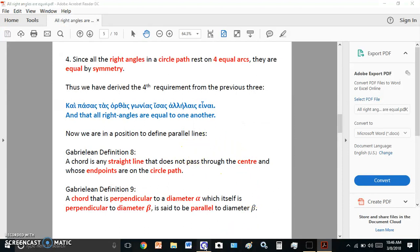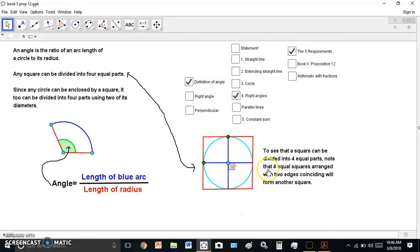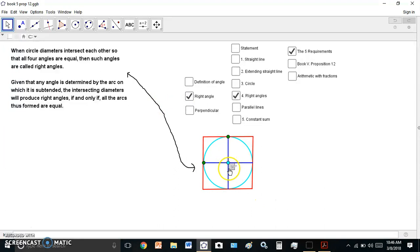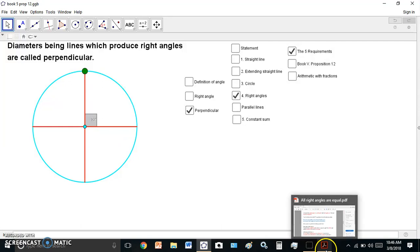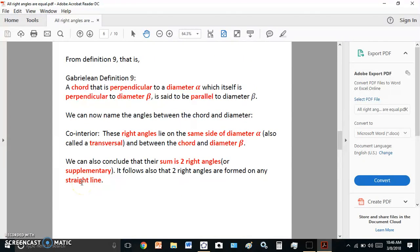I advise you to read the presentation. And then I show you that the definition of a right angle is simply when the space between these two rests on the same arc of four equal arcs. And then I also define perpendicular. In other words, diameters are lines which produce right angles, and they're perpendicular. And all these things that I derive are done systematically until I get to Gabrielian definition 9.